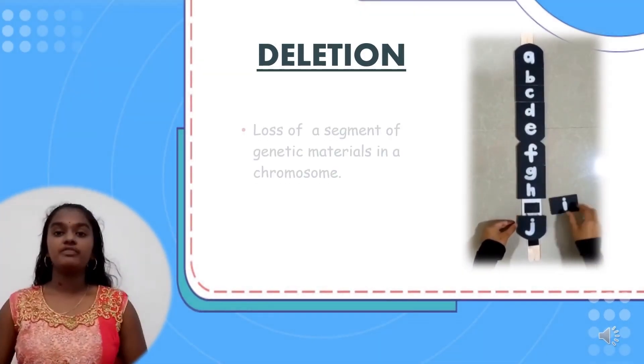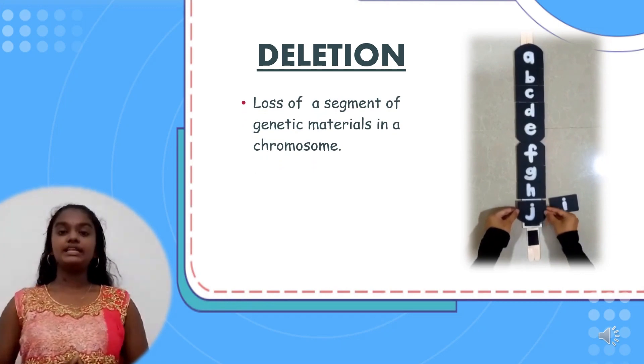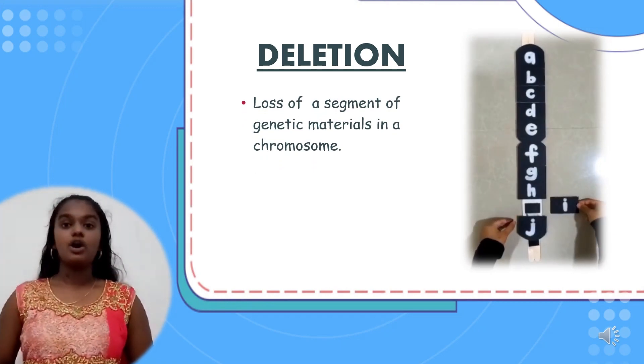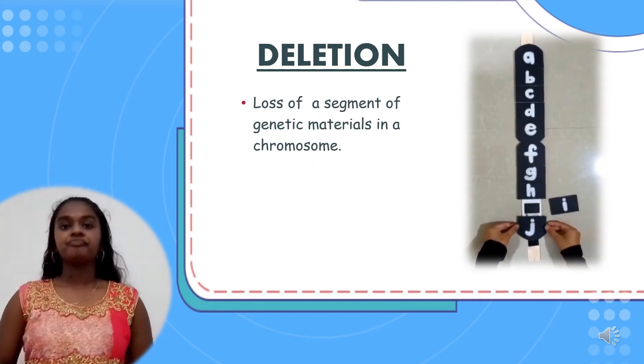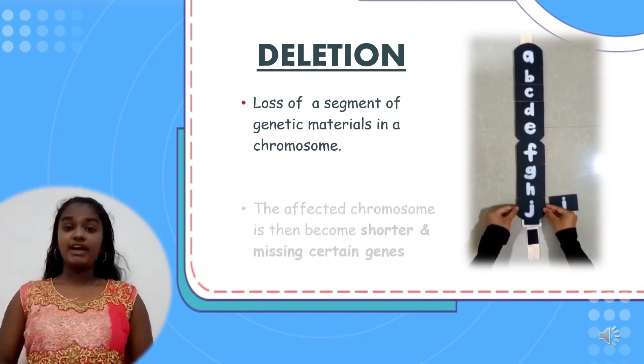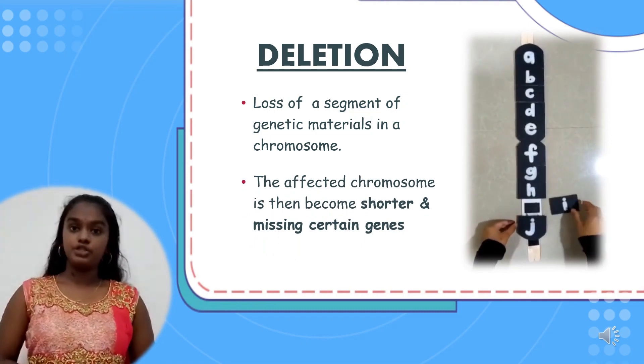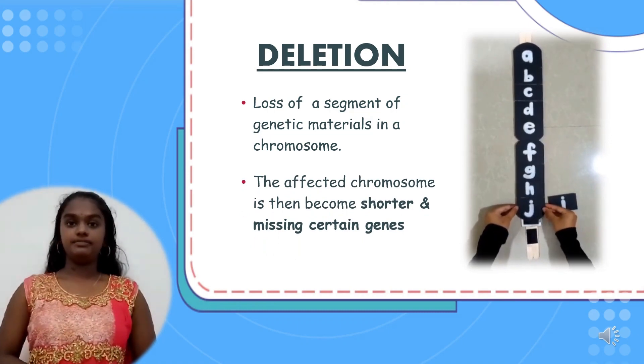The loss of a segment of genetic material in a chromosome is called deletion. The affected chromosome then becomes shorter and is missing certain genes.